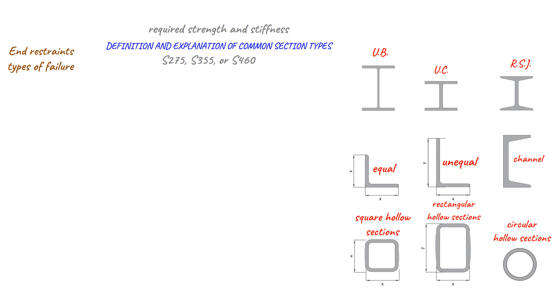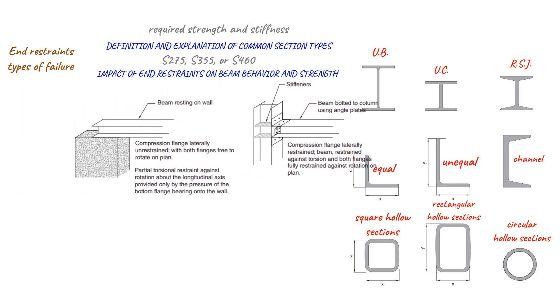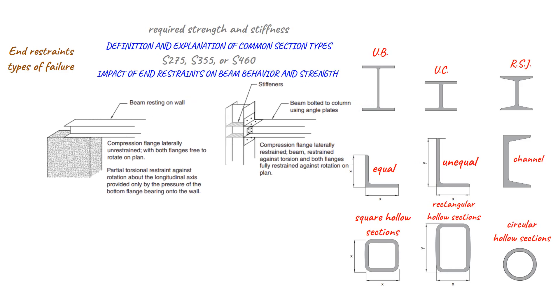Now let's talk about the impact of end restraints on the behavior and strength of steel beams. End restraints are essentially any type of support that prevents the beam from rotating or deflecting at the ends.